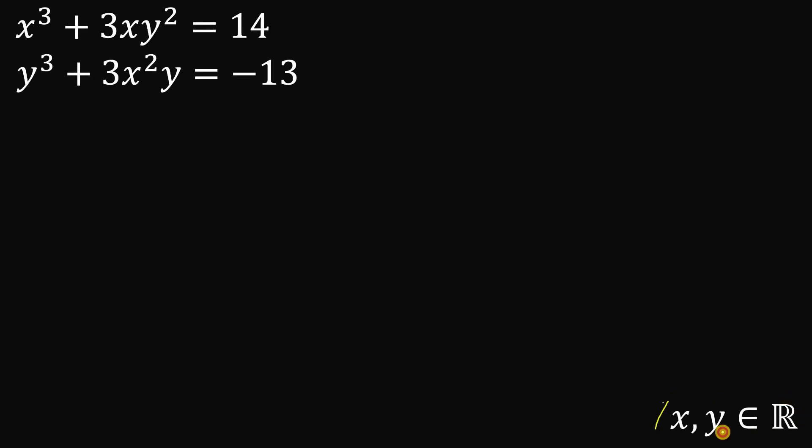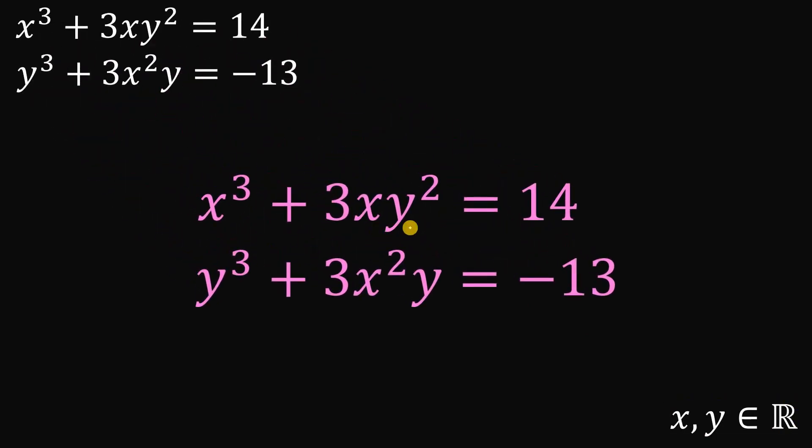Now let's see if you got the correct answer. Take note that x and y here are both real numbers. So to answer this question, let's get the equations x³ + 3xy² = 14 and y³ + 3x²y = -13.